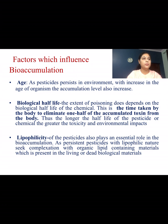The factors which influence bioaccumulation include: first, age — as pesticides persist in the environment, their concentration increases in the animal body with the organism's age. Second, biological half-life — the extent of poisoning depends on the half-life of the chemical, which is the time taken by the body to eliminate one half of the accumulated toxin; the longer the half-life, the greater the toxicity and environmental impact. Third, lipophilicity — persistent pesticides with lipophilic nature seek complexation with organic lipid-containing materials present in living or dead biological material.